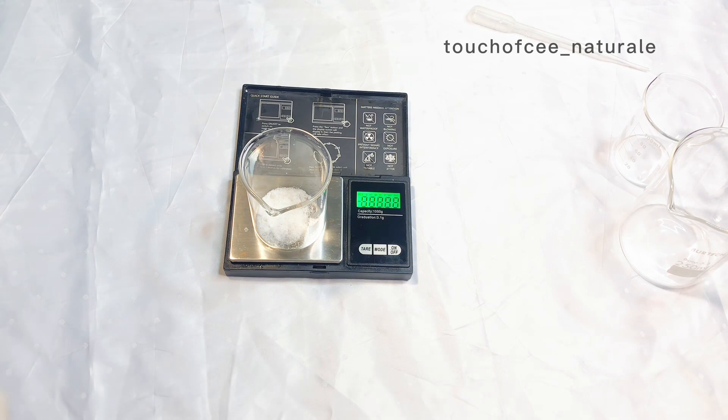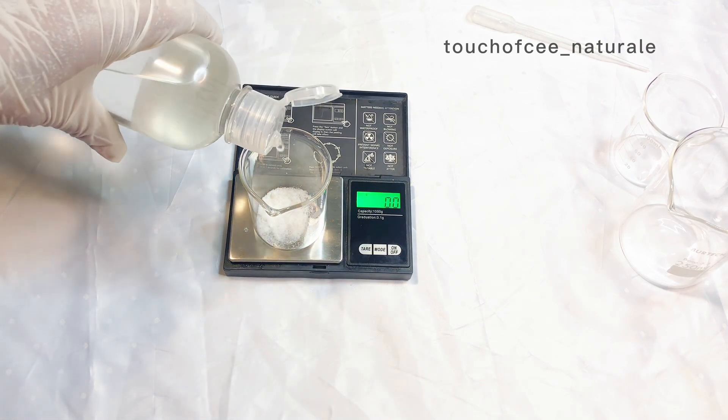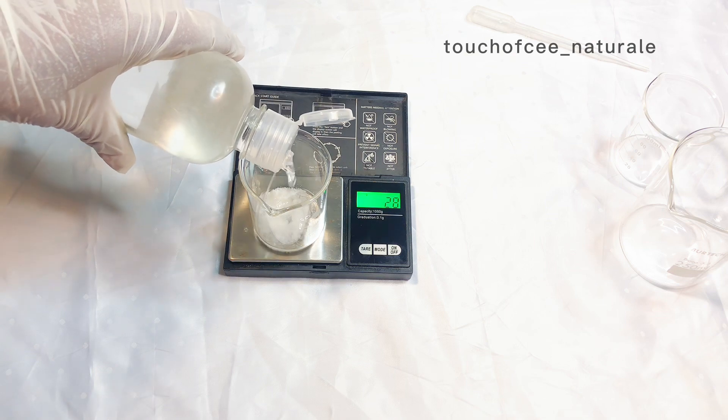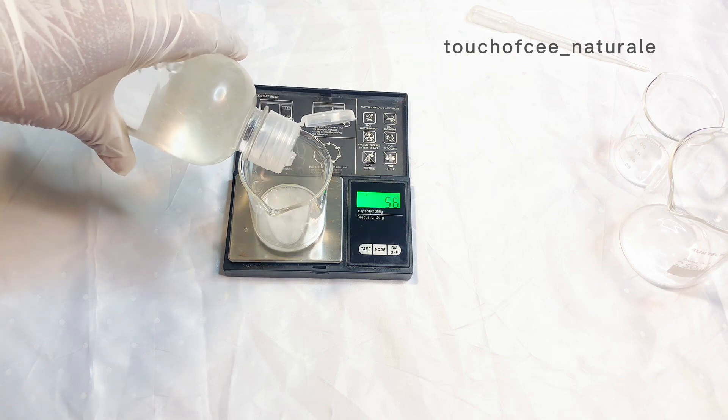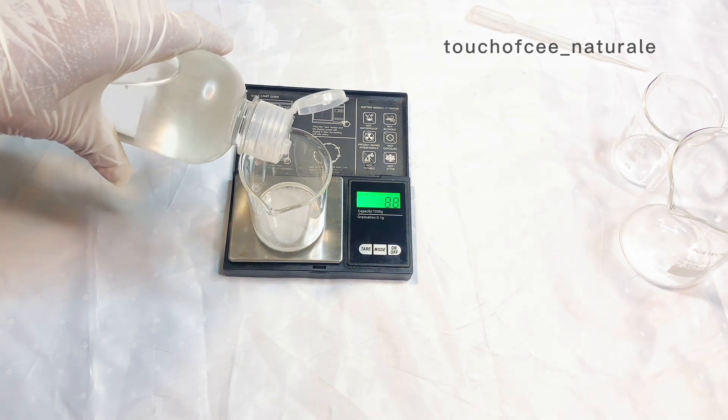Now the next ingredient is my propylene glycol. So I'm just going in with my propylene glycol to dissolve the salicylic acid. Now one thing you need to know is that if you use only propylene glycol to dissolve your salicylic acid...